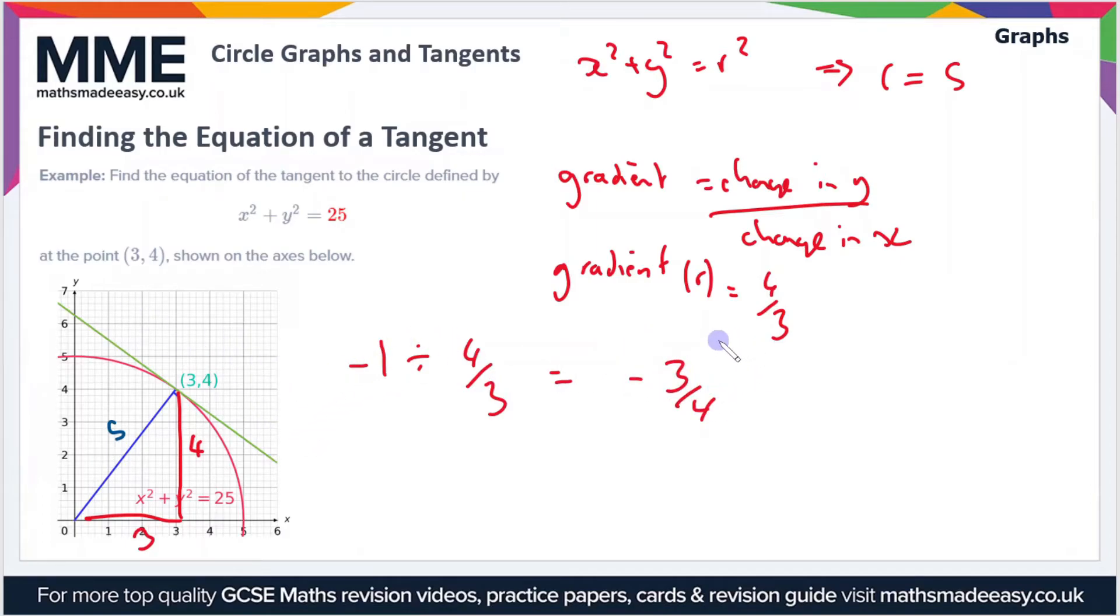In terms of our equation then for the tangent, we want it to be in the form y equals mx plus c. That's the general form for a straight line. So far we've got the gradient, so that's the value of m. Now we need to work out c using our y and x values, which is the coordinate three four.